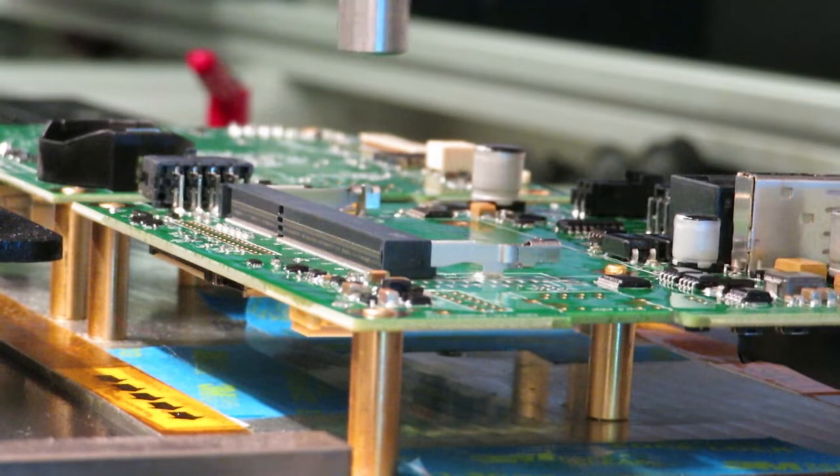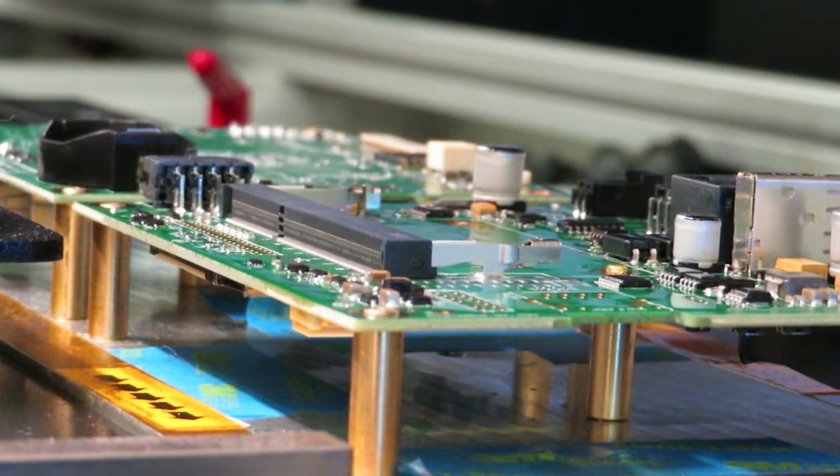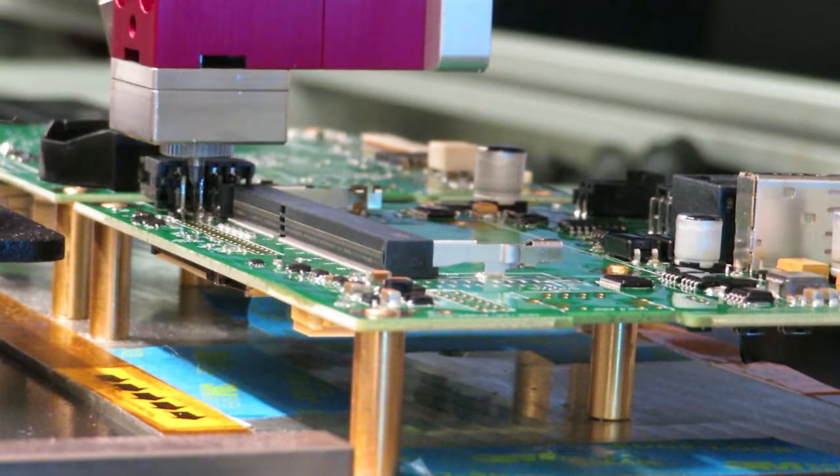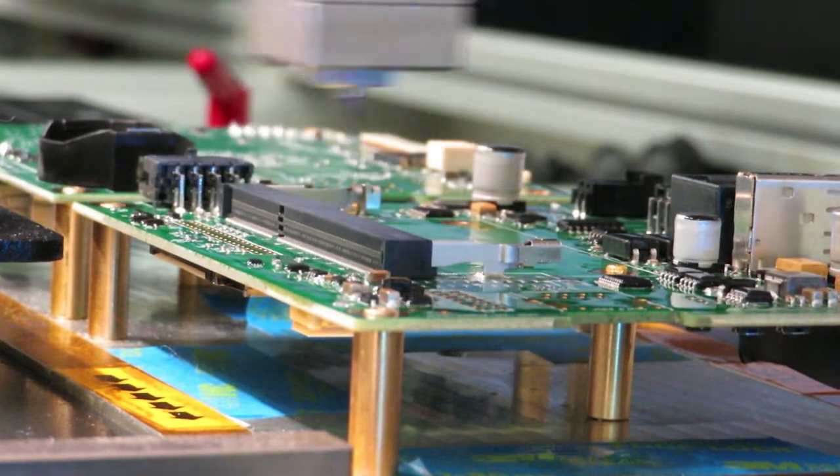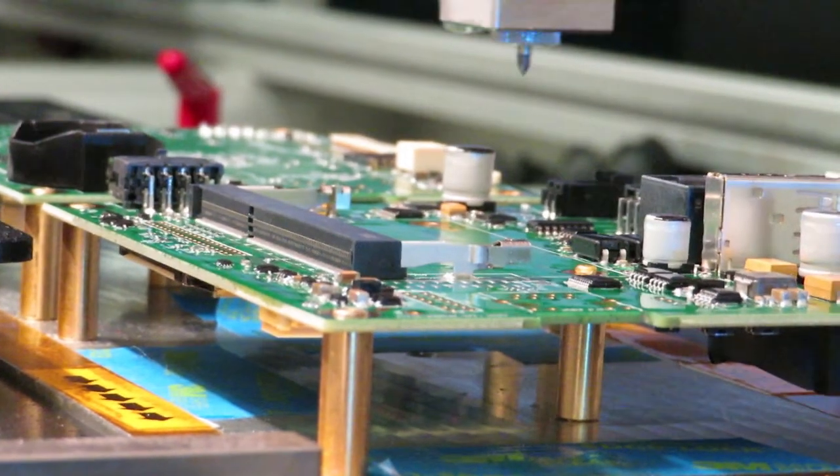We use an atomizing spray nozzle to coat large areas of the board at high speed and a micro dot dispensing nozzle for details like edging around tall components and around areas that we want left uncoated, such as contact pads.